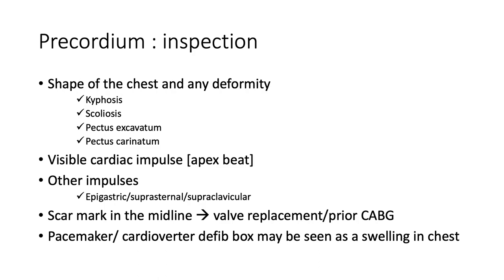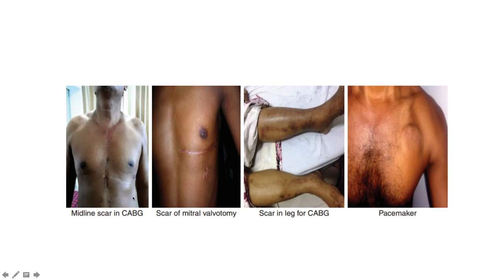Inspection of the precordium: determine the shape of the chest and any deformity — kyphosis, scoliosis, pectus excavatum or carinatum. Look for any visible cardiac impulse, usually the apex beat. Look for other impulses — epigastric, suprasternal, supraclavicular. A midline scar speaks to valve replacement or previous coronary artery bypass graft. Pacemaker and cardioverter-defibrillator boxes may be appreciated as a swelling in the chest. Examples: midline sternotomy scars from CABG, mitral valve scars (which may be lateral and hidden in female patients with pendulous breasts), leg scars from vessel harvesting for bypass, and pacemaker visible as an anterior chest wall swelling.